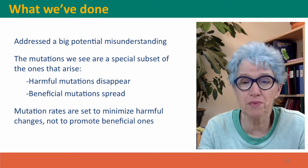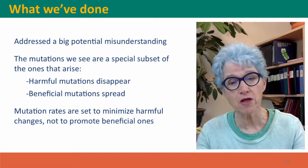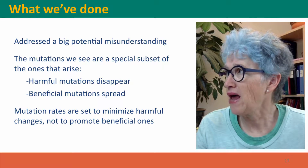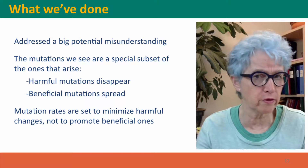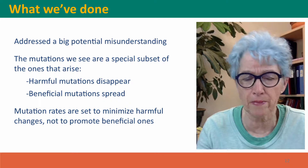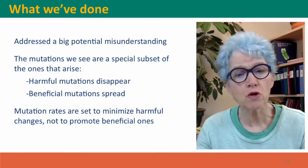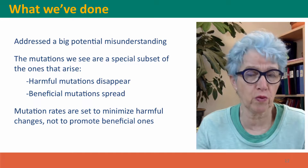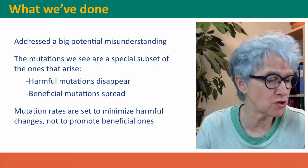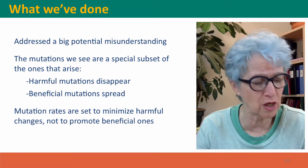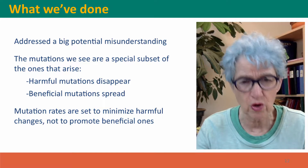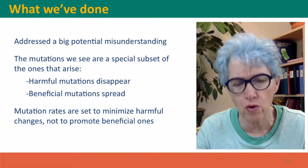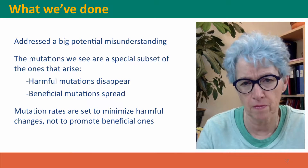We've addressed a big potential misunderstanding: the idea that somehow environmental effects can cause particular mutations to happen. They can't. This will also be important when we think about cancer genes, because there's a lot of sense that maybe it's my fault that this happened. But in fact, that's not true. We have no control over which mutations happen.